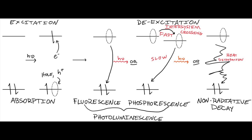When a photon comes in and excites an electron up from the ground state to some excited state, if that energy matches the energy of the incoming photon, that transition will happen — that process is called excitation. Once the electron is up in the higher state, it can do a few different things. Through collisions, it can fall back down without doing anything, which is an example of non-emissive de-excitation.